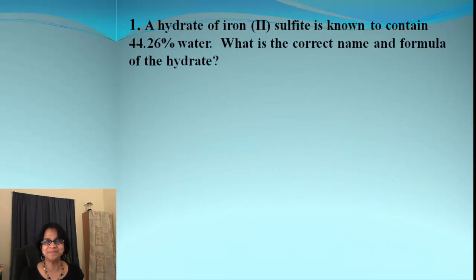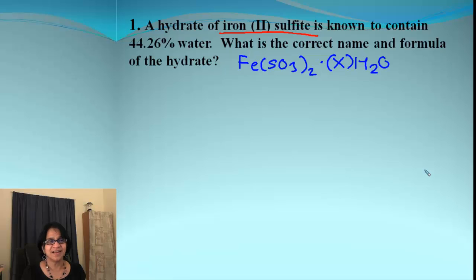Let's do one more problem. This is the hydrate of iron 2 sulfite. Let's write down the formula. It is Fe(SO3)2. It's a hydrate and we don't know how many moles of water are there. So let's imagine those were X moles of water. And then we are going to have two columns. One for anhydrous, second for water molecules.